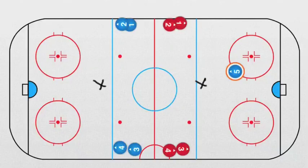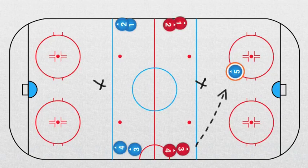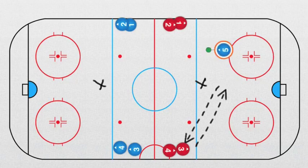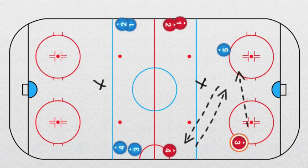Now we have a twigging drill — easy one but very effective. The blue player number five receives a pass from player number three, he plays it back, he goes this way, this player goes this way. He can take a shot or he can play a cross pass and shoot.